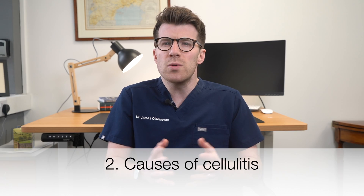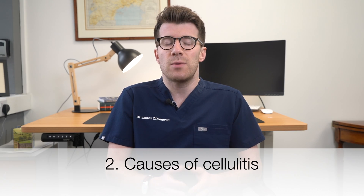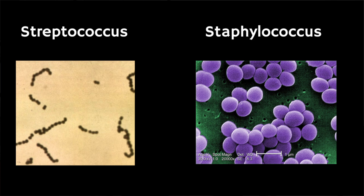Cellulitis is caused by different bacterial infections. However, streptococcus (strep) or staphylococcus (staph) are the most common causes. In general it's not contagious, meaning that it doesn't spread from one person to another.